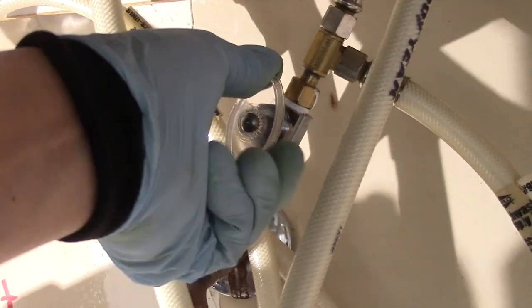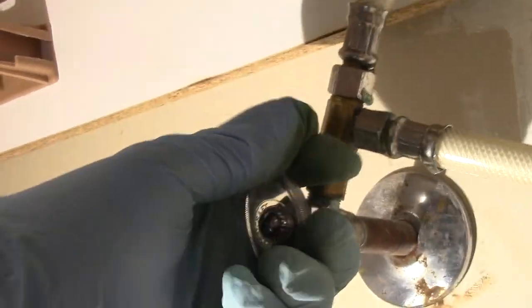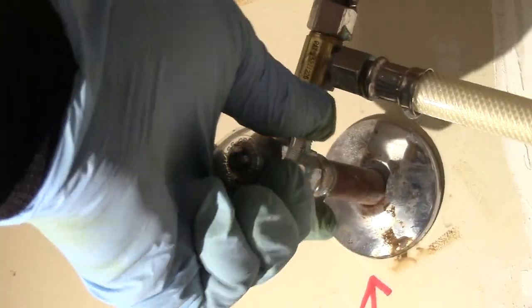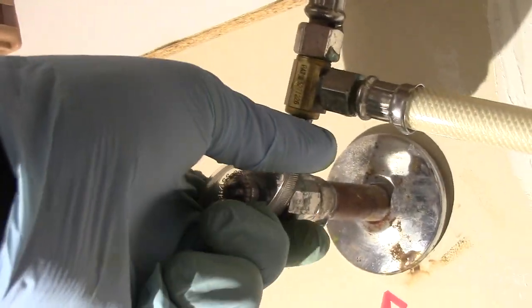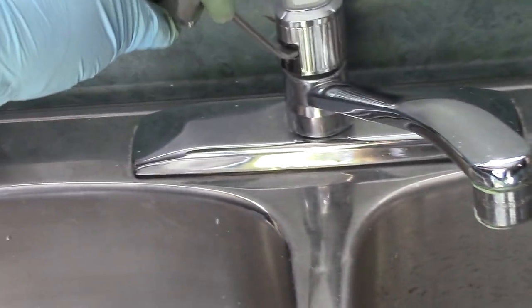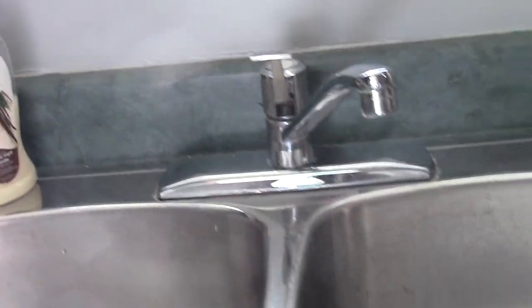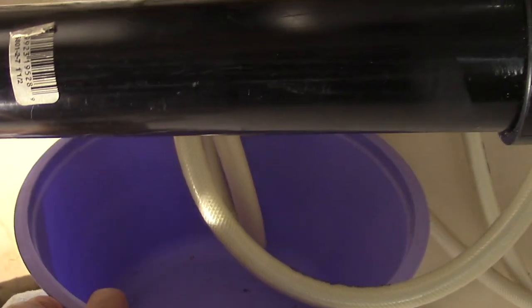The next step is to shut off the cold water valve, then shut off the hot water valve. Notice it's a little harder than usual. Check our faucet to see everything shut off. Looks good. Have our bucket to catch the excess water.